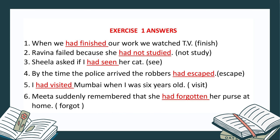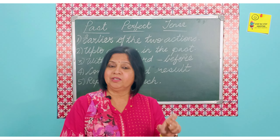'Raveena failed because she had not studied' — this is the past perfect in the negative form. 'Sheila asked if I had seen her cat' — reported speech. 'By the time the police arrived, the robbers had escaped.' 'I had visited Mumbai when I was six years old' — referring to a particular time. 'Meeta suddenly remembered that she had forgotten her purse at home' — one simple past and one past perfect.